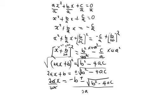Lastly, we have x equal to negative b plus or minus the square root of b squared minus 4ac, all over 2a. This is what is called the quadratic formula.